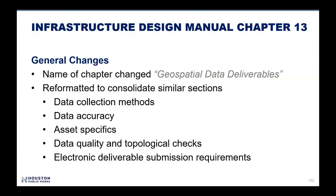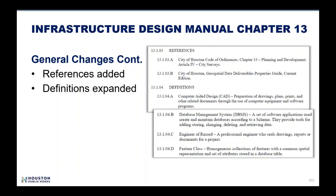In general, the name of the chapter was changed from GIS Data Digitization Standards to Geospatial Data Deliverables. The chapter was also reformatted to consolidate similar sections into global sections to eliminate repetition. As a result, Chapter 13 now contains overarching sections on data collection, data accuracy, asset-specific information, data quality, and electronic deliverable requirements. A reference section was added to reference the City Code of Ordinances, and the definitions section was expanded to define frequently used terms.